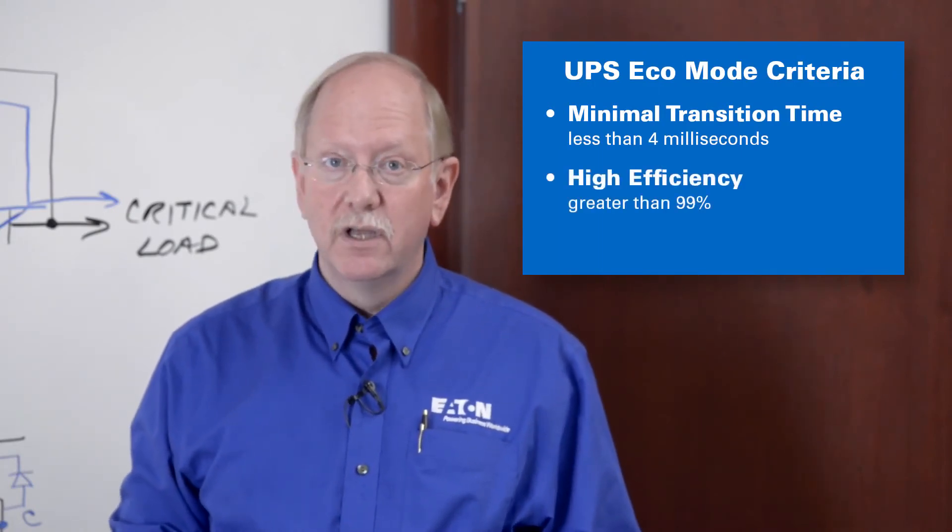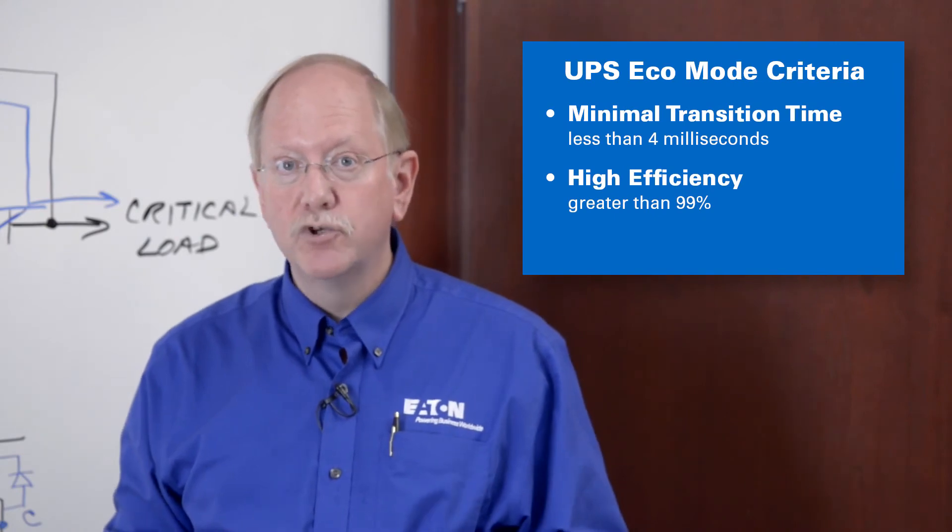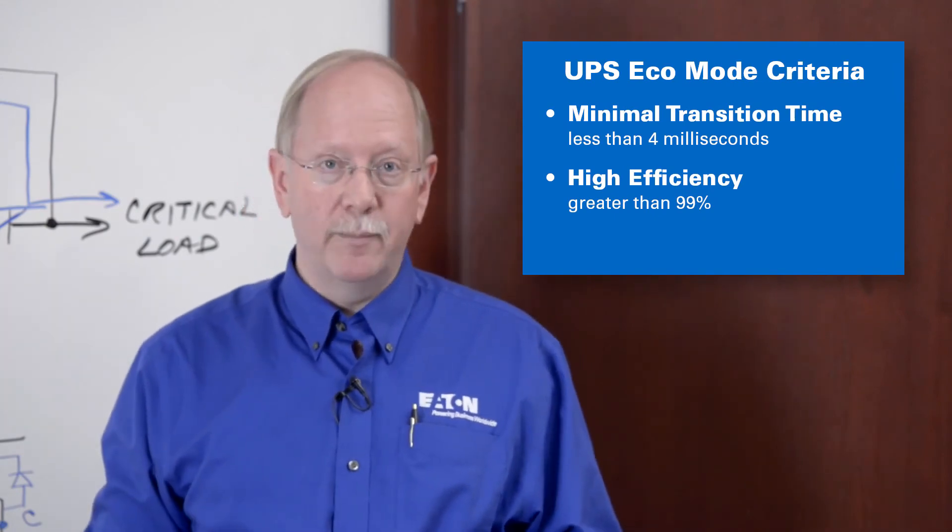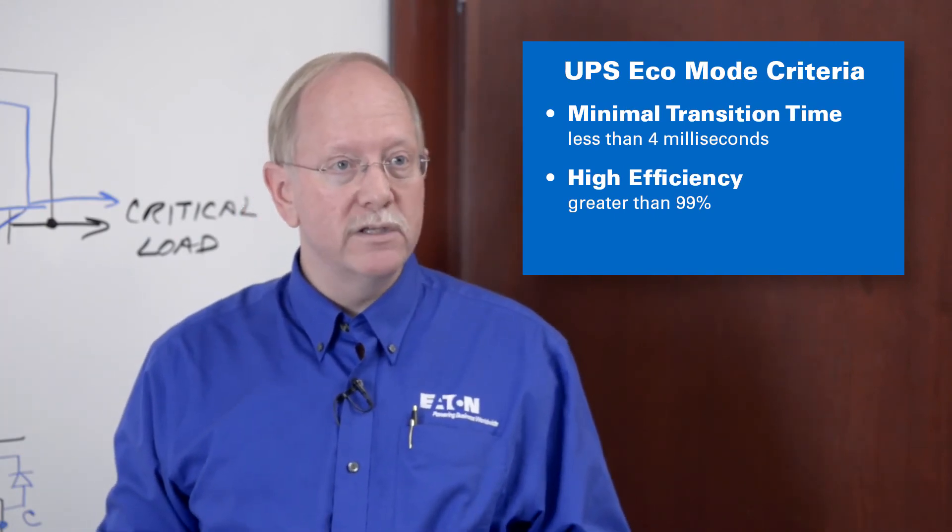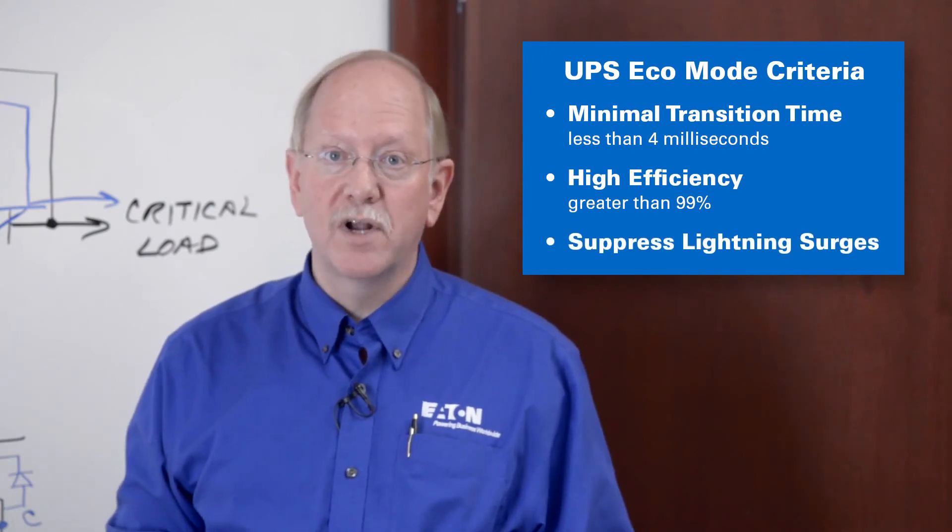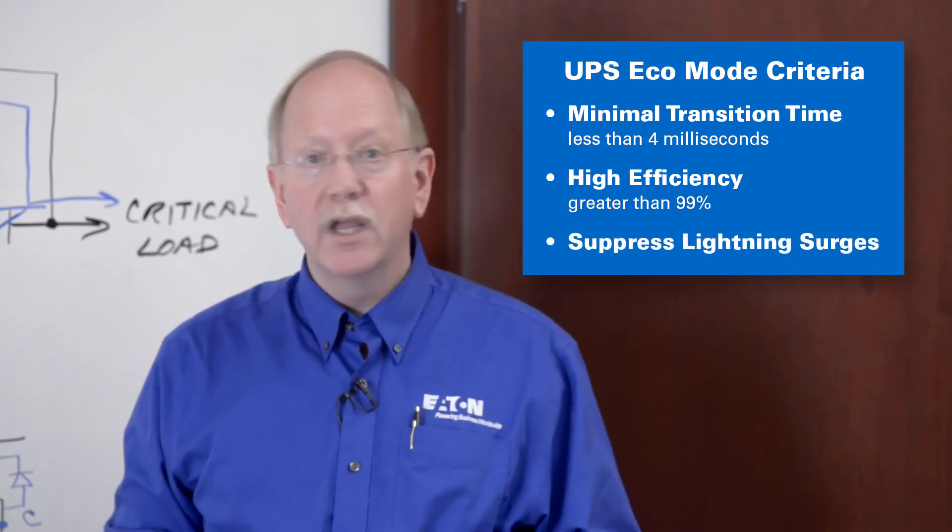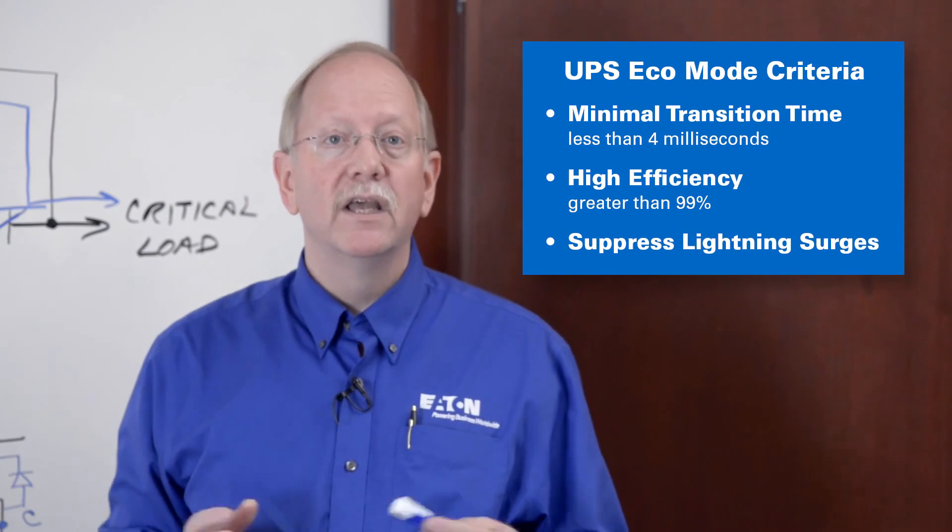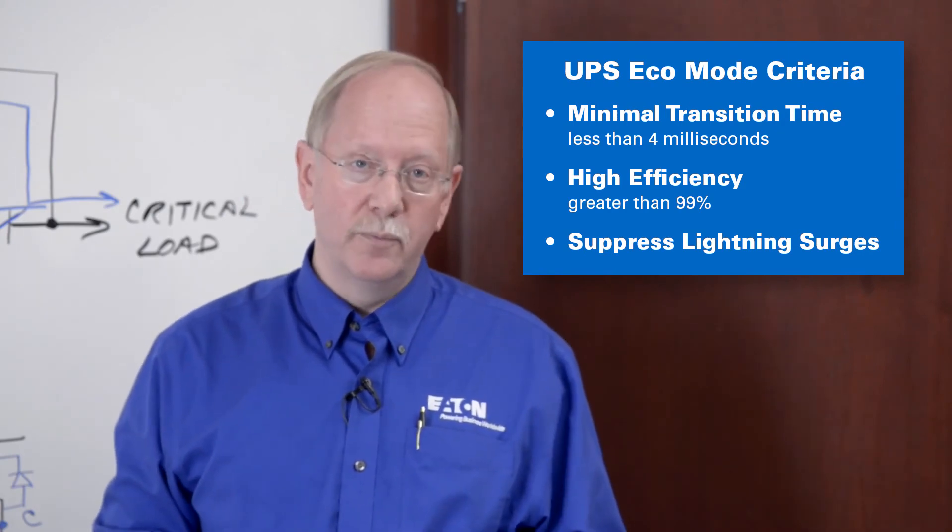The next one is efficiency. The system efficiency in Eco mode should be greater than 99%. And the last one is, can your Eco mode effectively suppress lightning strike style surges and protect your critical devices even without surge protection on your building entrance.